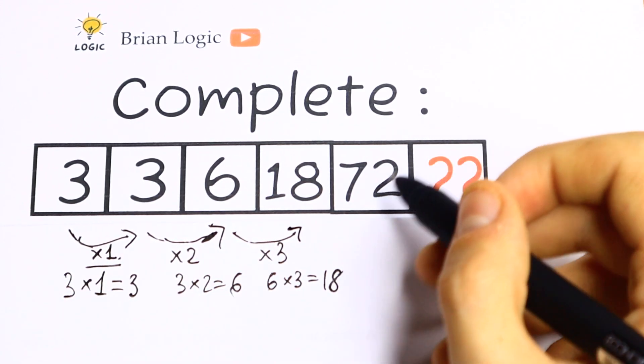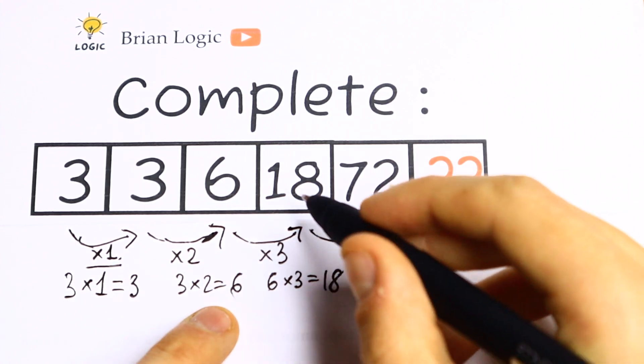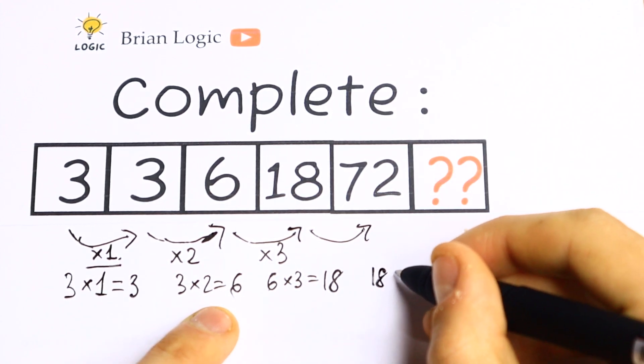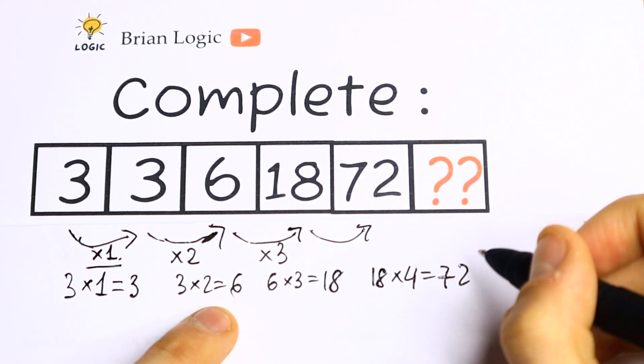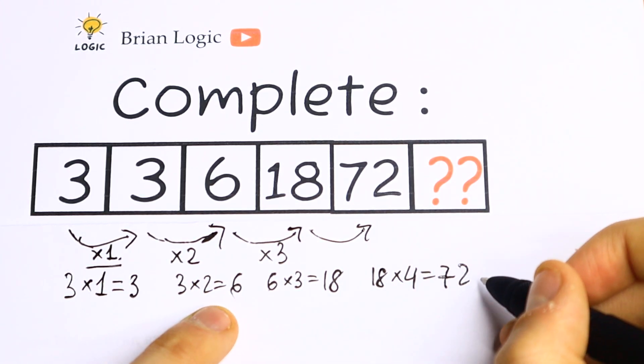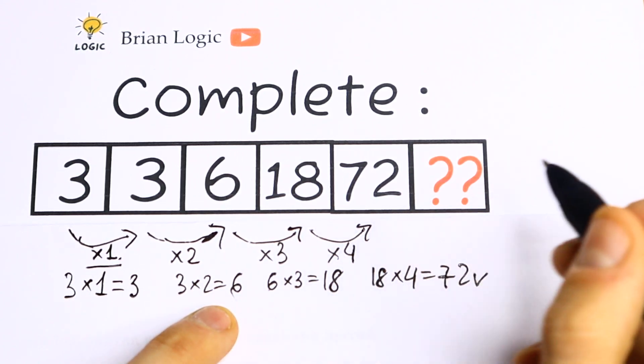By 1, by 2, by 3, and let's check this one. It will be really good if we multiply 18 by 4 and we get 72. Let's check this expression. Is this correct or not? Of course this is correct. We multiply this number by 4.